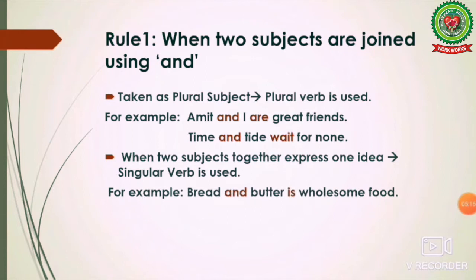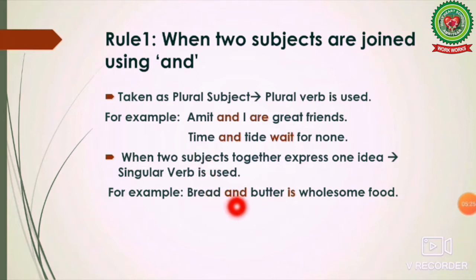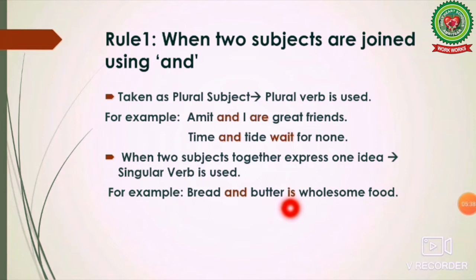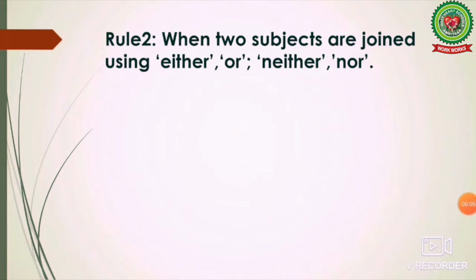'Bread and butter is wholesome food.' Here, 'bread and butter' is considered a single unit, so even though it is joined by 'and,' it is treated as a singular subject — that is why 'is' is used. Similarly, 'Slow and steady wins the race' refers to a single person who is slow but steady. It is a singular subject, so the singular verb 'wins' is used, not 'win.'